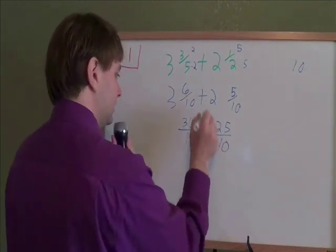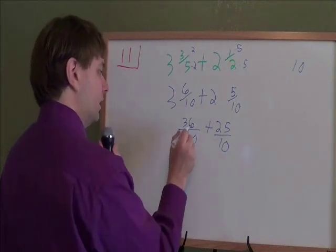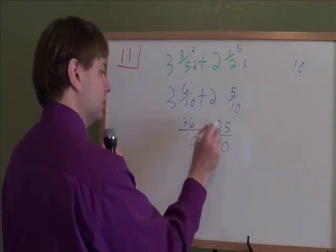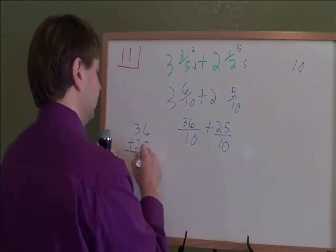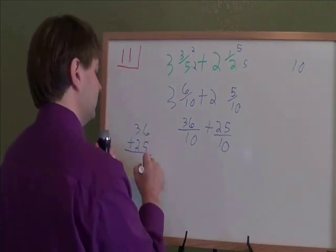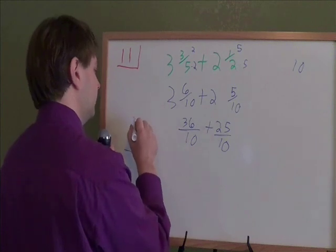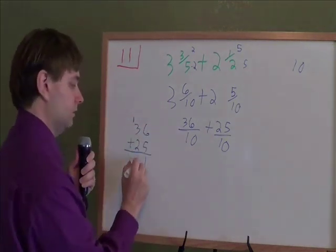We are still adding these two. That plus comes straight down. And then we have to add together the numerators. What is 36 plus 25? When we are adding, remember 6 plus 5 is 11, and you carry the 1. And 1 plus 3 is 4, plus 2 is 6.